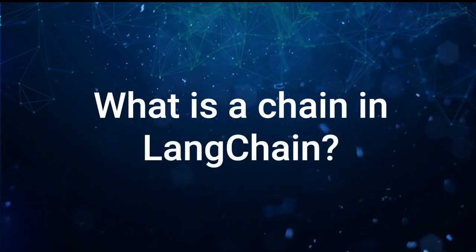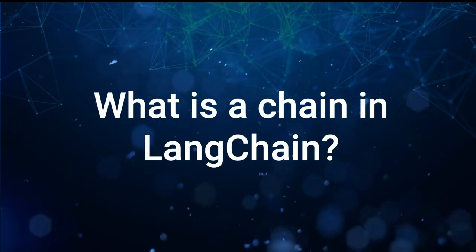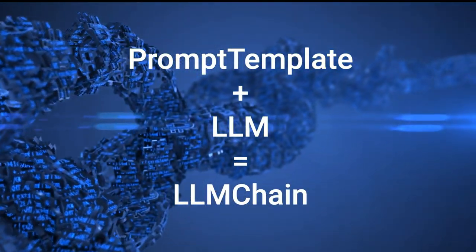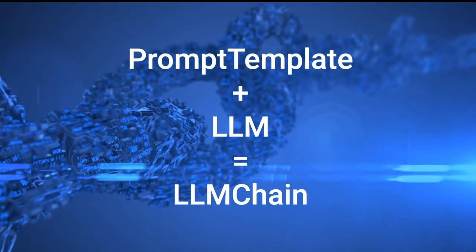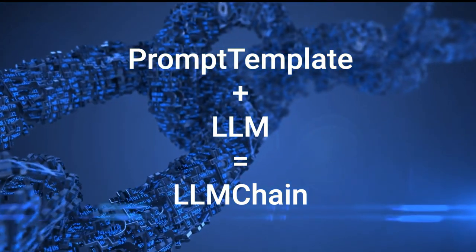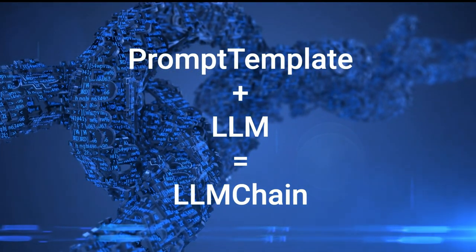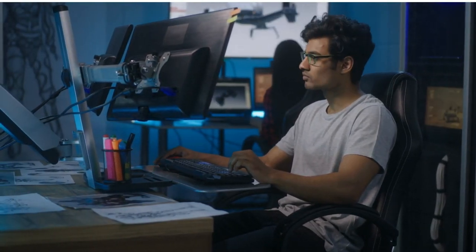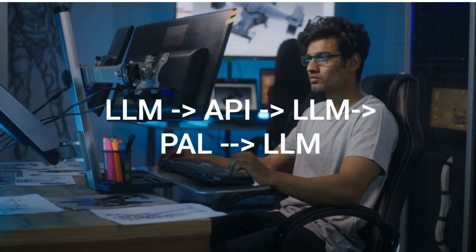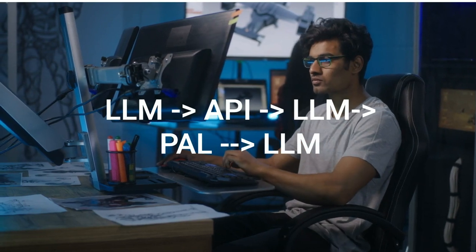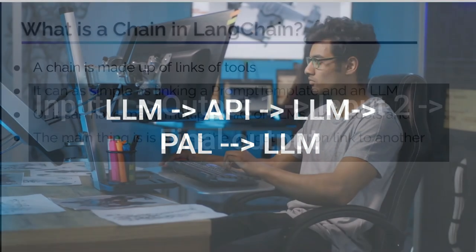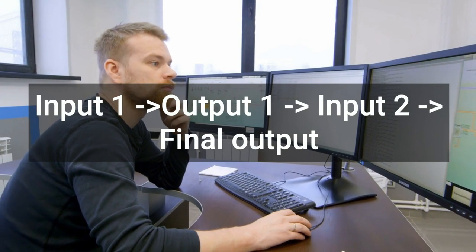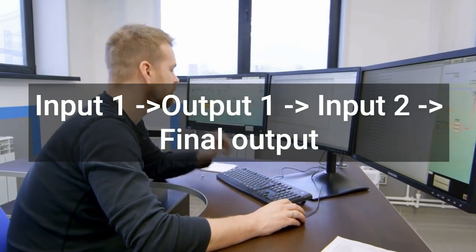What is a chain in LangChain? A chain is really just made up of links of tools — you can think of each tool as being a link in an overall chain. These can be as simple as linking a prompt template and a large language model to make an LLM chain, which is one of the most common chains you'll see. It can also be much more complicated, going through multiple steps with multiple large language models and a variety of utility tools. The key thing to understand is that the output of one link becomes the input of the next link.